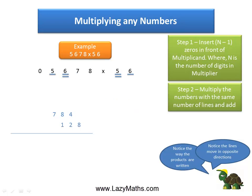The next step is 5 times 6 and 6 times 5. 5 times 6 is 30, 6 times 5 is also 30, and 30 plus 30 equals 60. We put 60 in the carryover format.